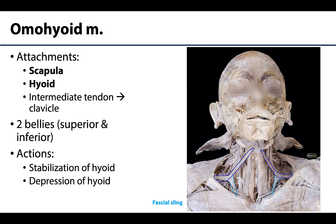The omohyoid is unique amongst the infrahyoid muscles because it has two bellies — a superior belly and an inferior belly. These bellies are connected by an intermediate tendon, which is tethered to the clavicle by a fascial sling. The prefix 'omo' means shoulder, so the name omohyoid indicates that the inferior belly has an attachment to the scapula, while the superior belly attaches to the hyoid bone. Similar to its superficial partner the sternohyoid, the omohyoid plays a role in stabilization and depression of the hyoid bone.